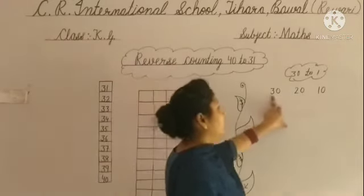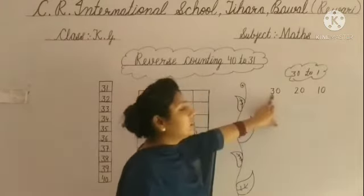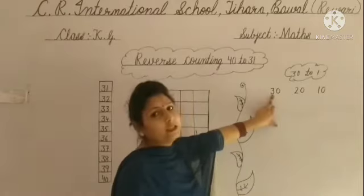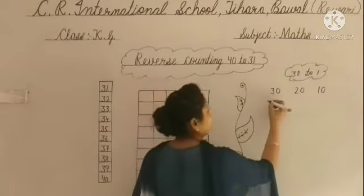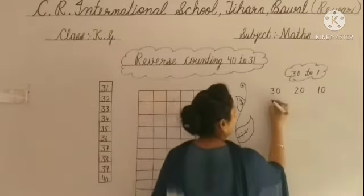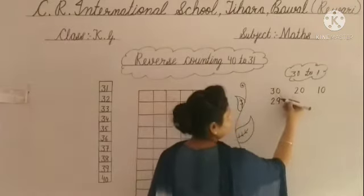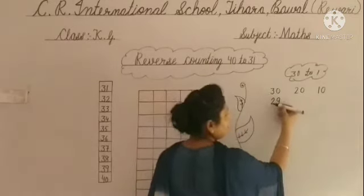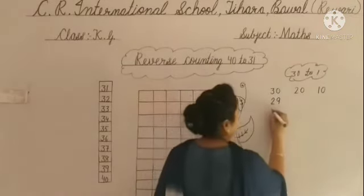देखो कैसे लिखी थी हमने. Start कहाँ से करी थी? 30. 30 से before क्या होता है? क्योंकि 0 से before 9 और 3 से before 2 — तो 29.